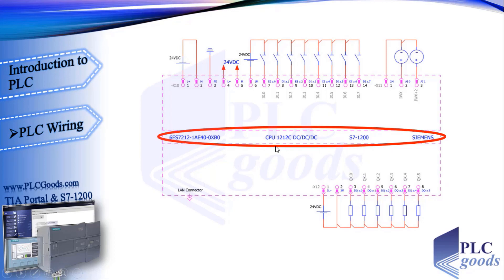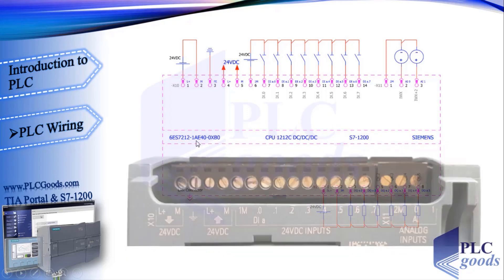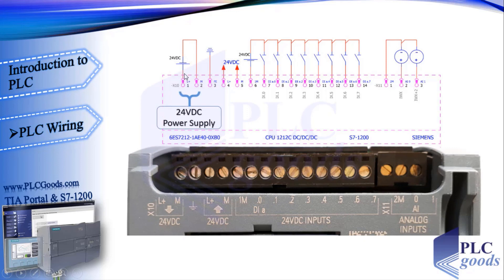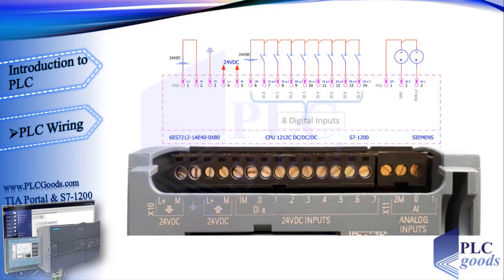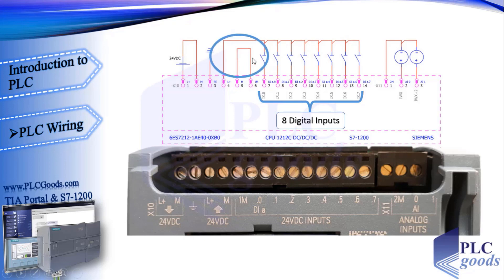This is a simple wiring of my CPU with this information. Wiring of the CPU and others is pretty much the same, but we advise reading the manual carefully for each device. First, the CPU needs an external 24-volt DC power supply to work. We will use the internal 24-volt DC to power digital inputs.